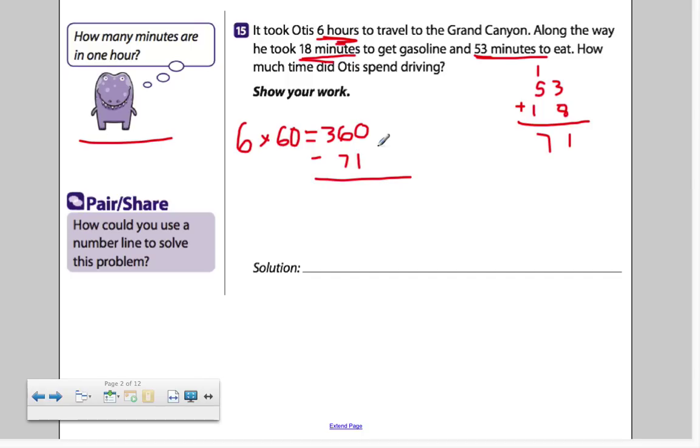360 minus 71 will get us how many minutes Otis spent driving. Zero minus one, you can't even do that. So we've got to borrow. Thank you, six. You turn into a five. Our zero gets turned into a ten. Ten minus one is nine. Can't do five minus seven. It's too small. So we borrow one more time. Turn that three into a two. Fifteen minus seven is eight. Two minus nothing is two. The answer, 289 minutes.